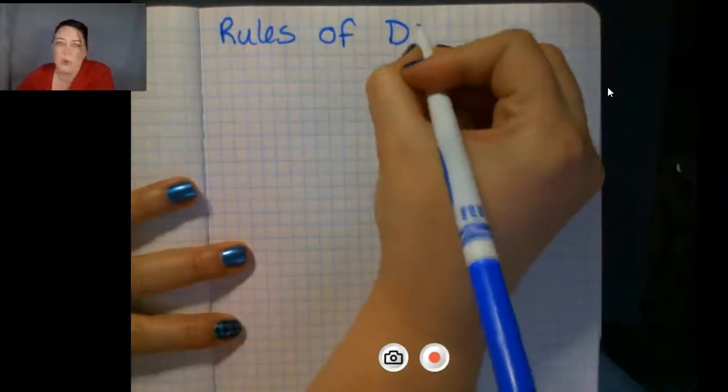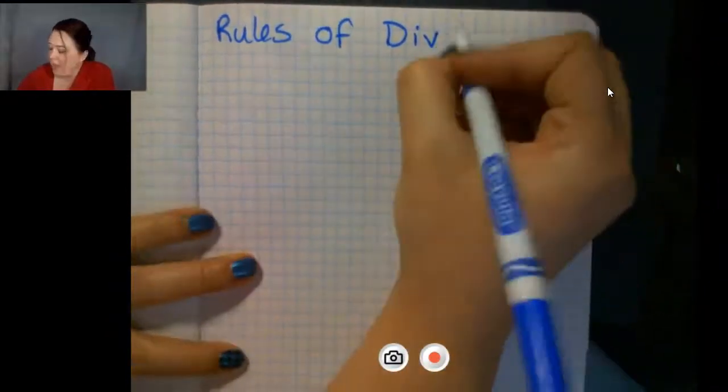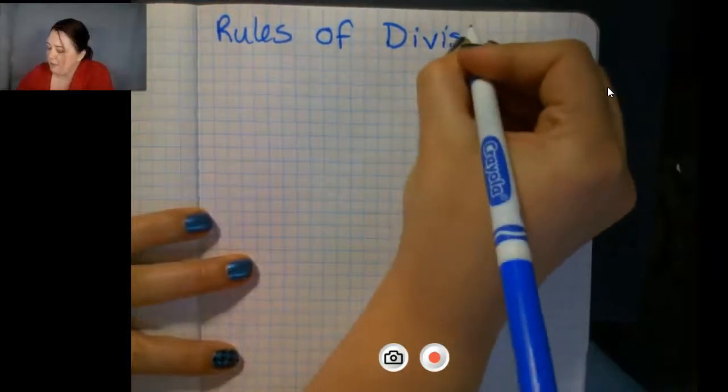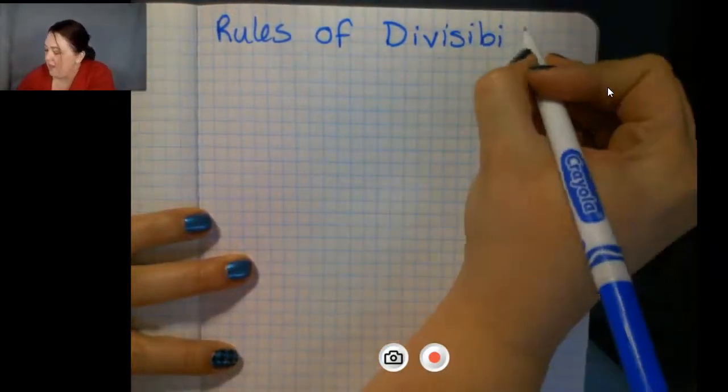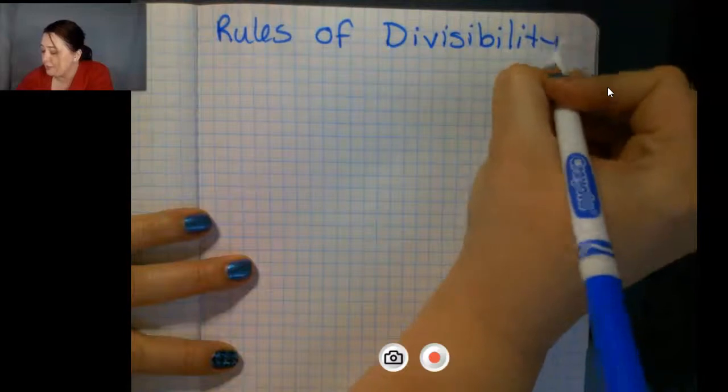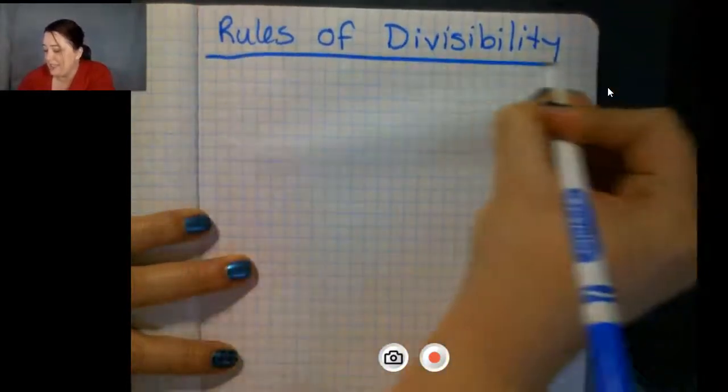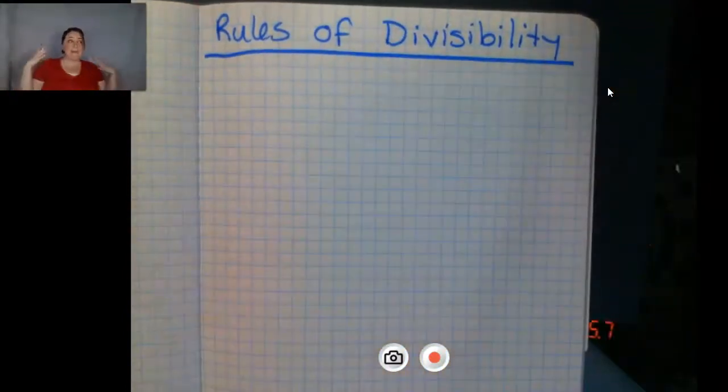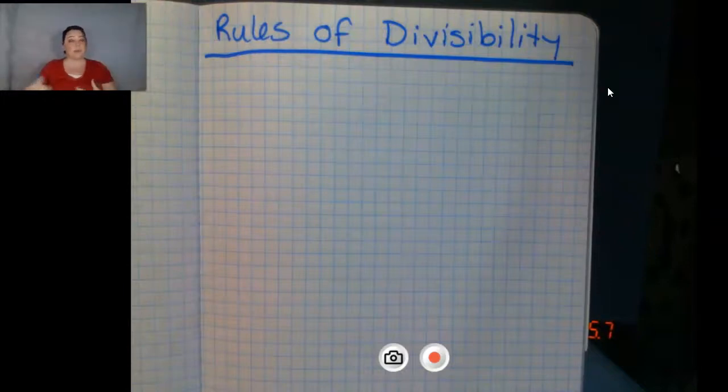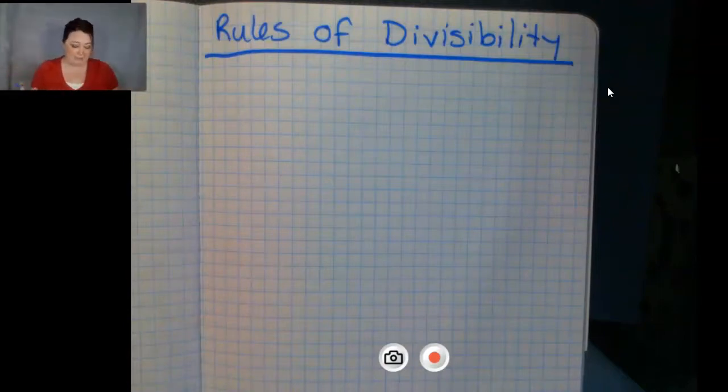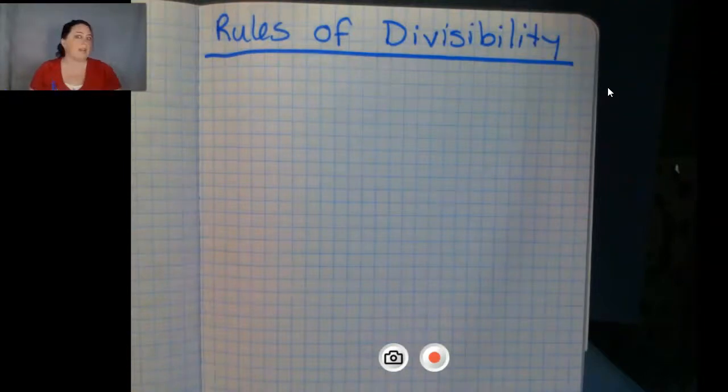These are so much fun. I understand it's probably not going to be that way for everyone, but oh, they are so great, you guys. The rules of divisibility. And basically there are some rules for some of our numbers that can tell you if a number is going to be evenly divided by that number. And these rules apply every single time. It will work if you do it correctly.